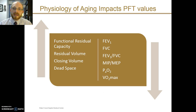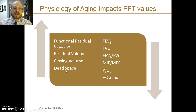Aging impacts a number of pulmonary physiology values. In particular, functional residual capacity and residual volume increase, partly because closing volume increases. Dead space is also increased. FEV1, vital capacity, and their ratio all decrease, as do MIP and MEP — measures of respiratory muscle strength. Maximum oxygen consumption also decreases.